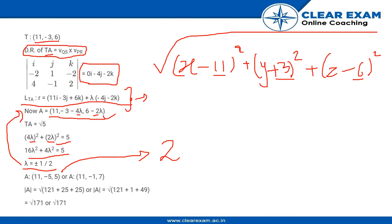we can write the modulus as root of 11 square plus 5 square plus 5 square or root of 11 square plus 1 square plus 7 square. So both of these give us the same value that is root of 171.